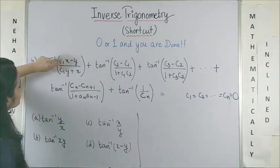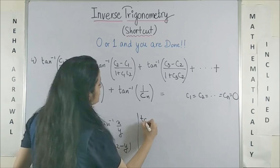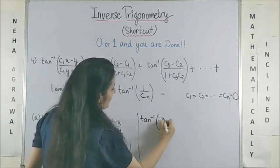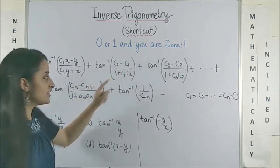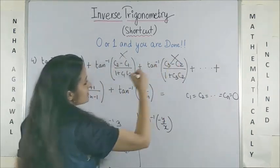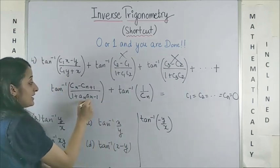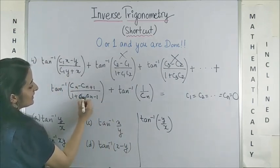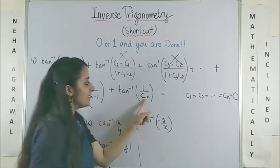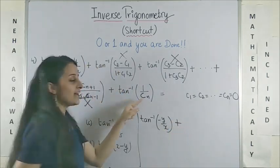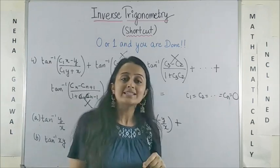In the first expression, this vanishes. We are left with only tan inverse of minus y by x. Here, this term because C2 minus C1 is 0, this vanishes, this vanishes, so on and so forth. Even this one vanishes. So, we are left with the last one which would be plus tan inverse of 1 upon Cn.